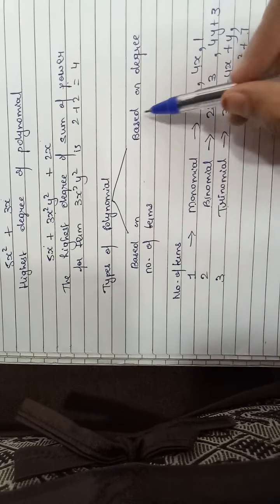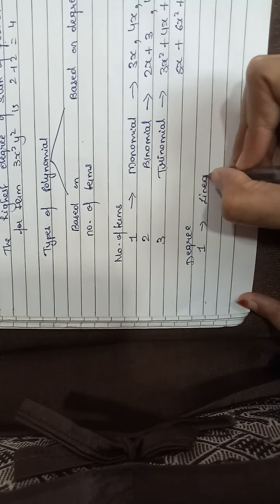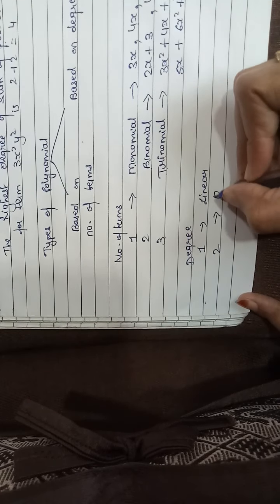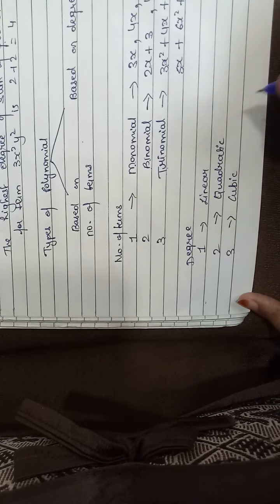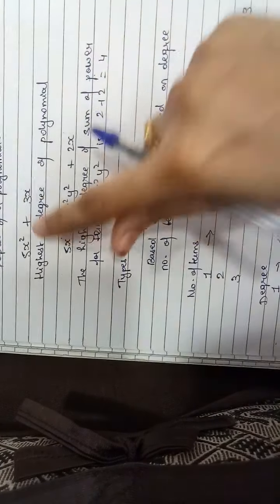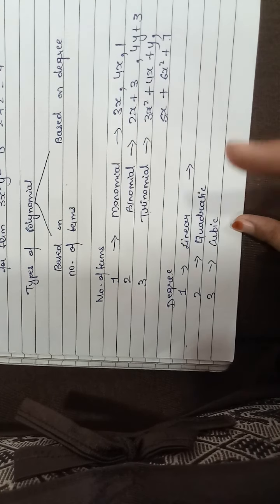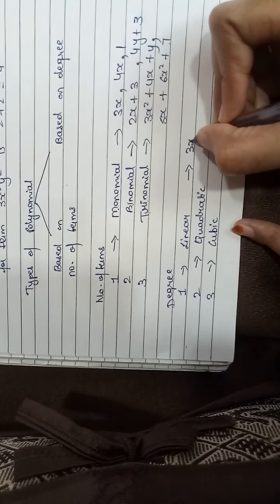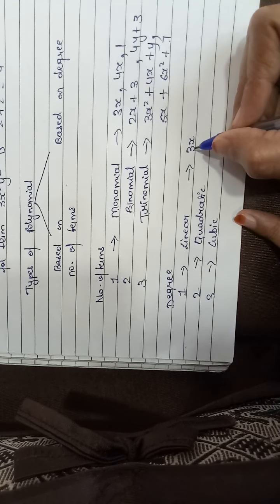Now coming to types of polynomials based on degree. If degree is 1 we say it as linear polynomial; if degree is 2 we say it as quadratic polynomial; and if degree is 3 we state it as cubic polynomial. Linear means the degree should be 1 — it can consist of 1 term, 2 terms, 3 or multiple terms, but make sure the degree is only 1. For example, 3x — the degree is 1, so it is a linear polynomial.